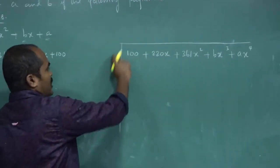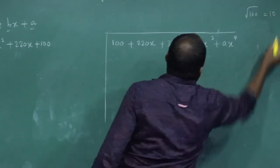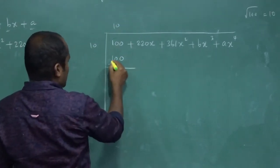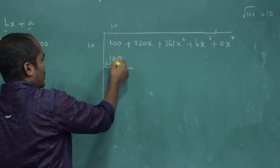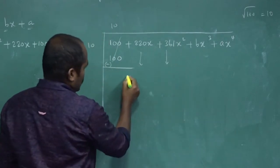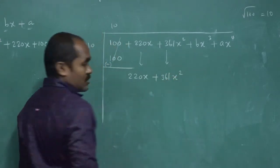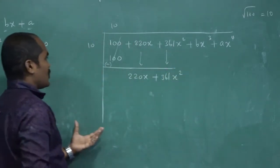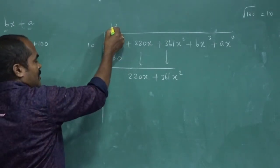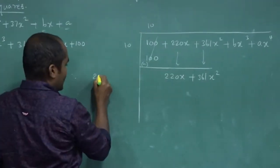Square root of 100 is 10. Write 10 here and also 10 in the divisor. 10 times 10 is 100. Sign change makes this minus 100, so 100 minus 100 is 0. Bring down the next two terms: 220x plus 361x². Double the quotient: 10 into 2 is 20.